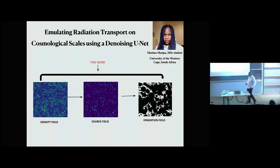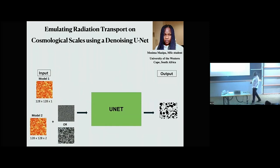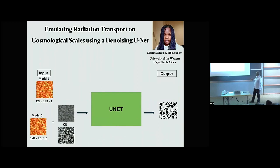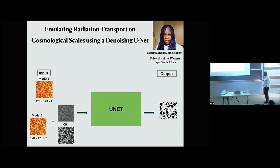If we can go from minutes to seconds, we can really generate maps at larger scales. We use a U-Net — a standard architecture. What's interesting is that you can train the U-Net in two different methods. The first is deterministic: you go directly from the density field to the ionized field. This is actually a very hard problem because you're going from a smooth field to a highly non-linear field.